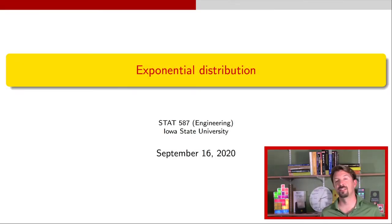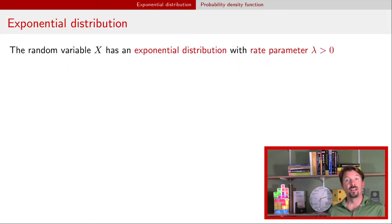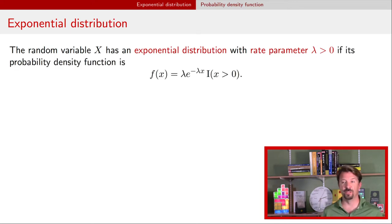Hi, I'm Dr. J and this is a brief video about the exponential distribution or exponential random variables. A random variable X has an exponential distribution with a single rate parameter, I'm going to call it lambda. That rate parameter must be positive, and it has this distribution if the probability density function for that exponential random variable has this form.